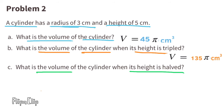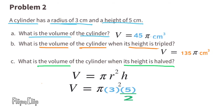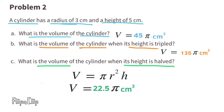Part C: What is the volume of the cylinder when its height is halved? Half of 5 centimeters is 2.5 centimeters, so we substitute h with 2.5. The radius is still 3, and 3 squared is 9. Nine times 2.5 equals 22.5. The volume of the cylinder when its height is cut in half is 22.5π centimeters cubed.